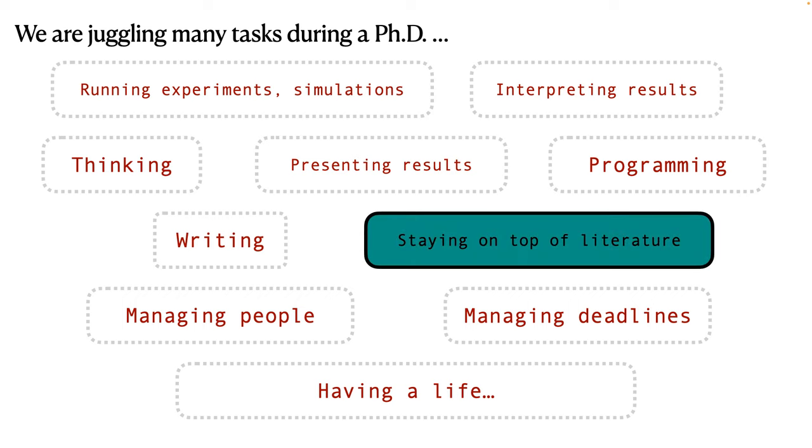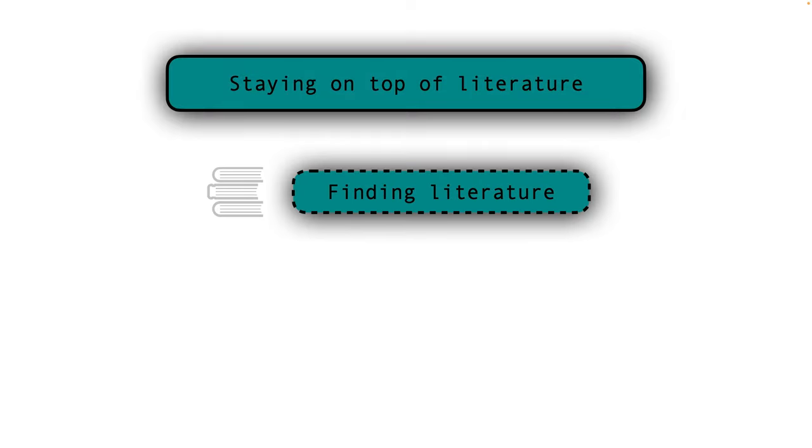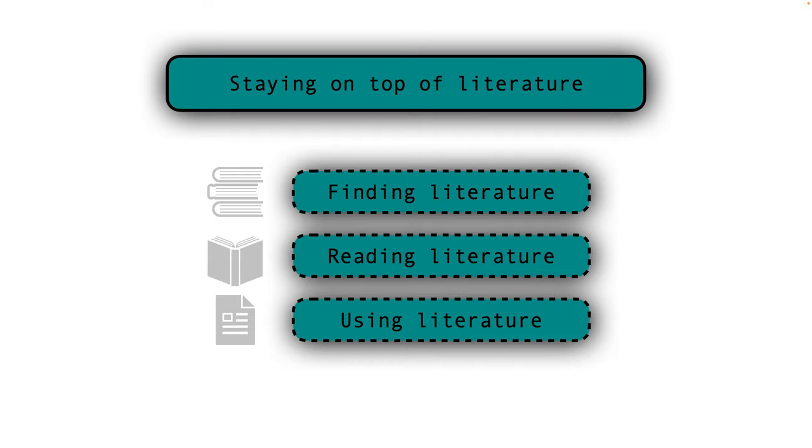In this video, I will focus on this box and I will try to help you stay on top of literature effectively. So staying on top of literature can be divided into three subtasks: finding the relevant literature, reading and learning from that literature, and using the literature in your own work.